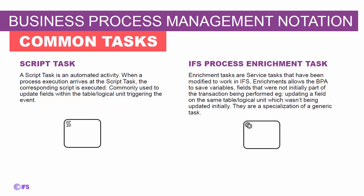A script task is a Java-based function used to automate an activity — for example, it allows you to update another field within the same table that triggered the BPA. The process enrichment task is an adaptation of the service task that allows you to store variables to be used in the ongoing workflow. For example, you might update the status of a record, collect the type of record as a variable, and use that variable further in the process automation.